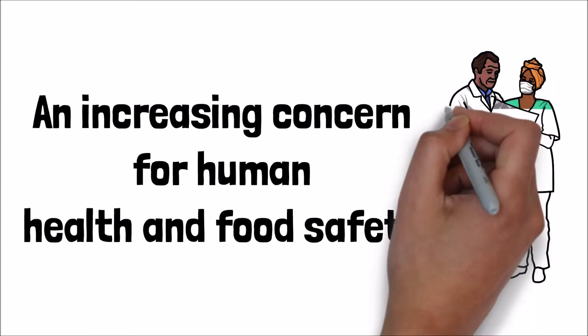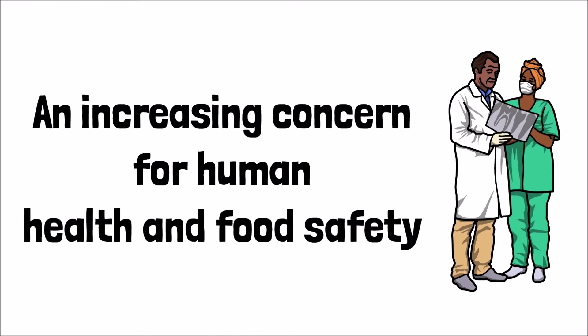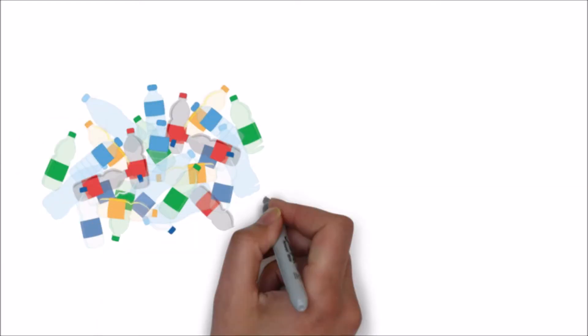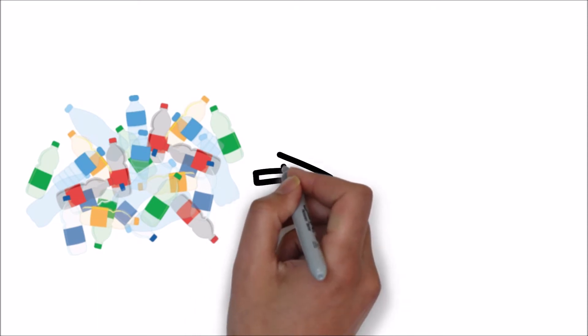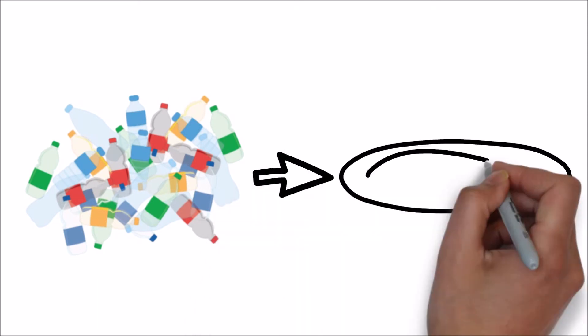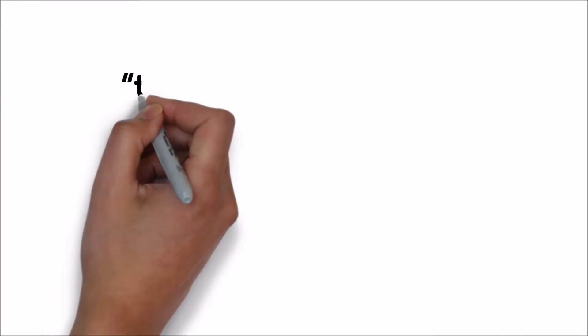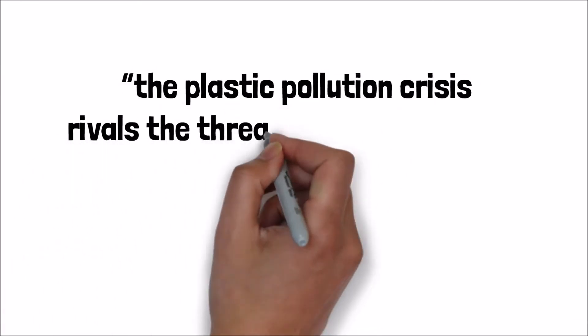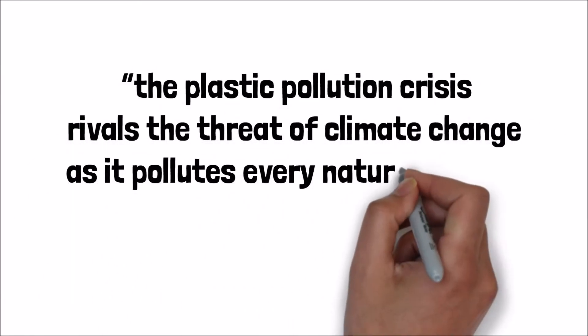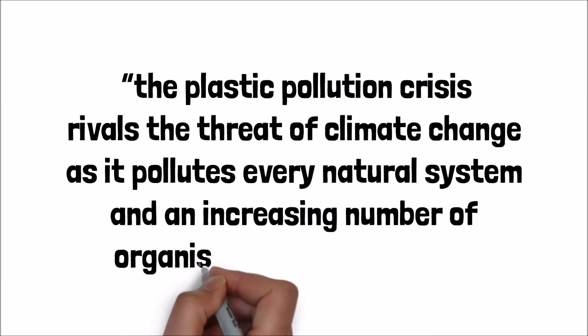It's impossible for plastics to usefully incorporate themselves into the food chain. Sea life eats the toxins contained in plastics, and that seafood ends up on our plates. Hugo Tagholm stated, the plastic pollution crisis rivals the threat of climate change as it pollutes every natural system and an increasing number of organisms on planet Earth.